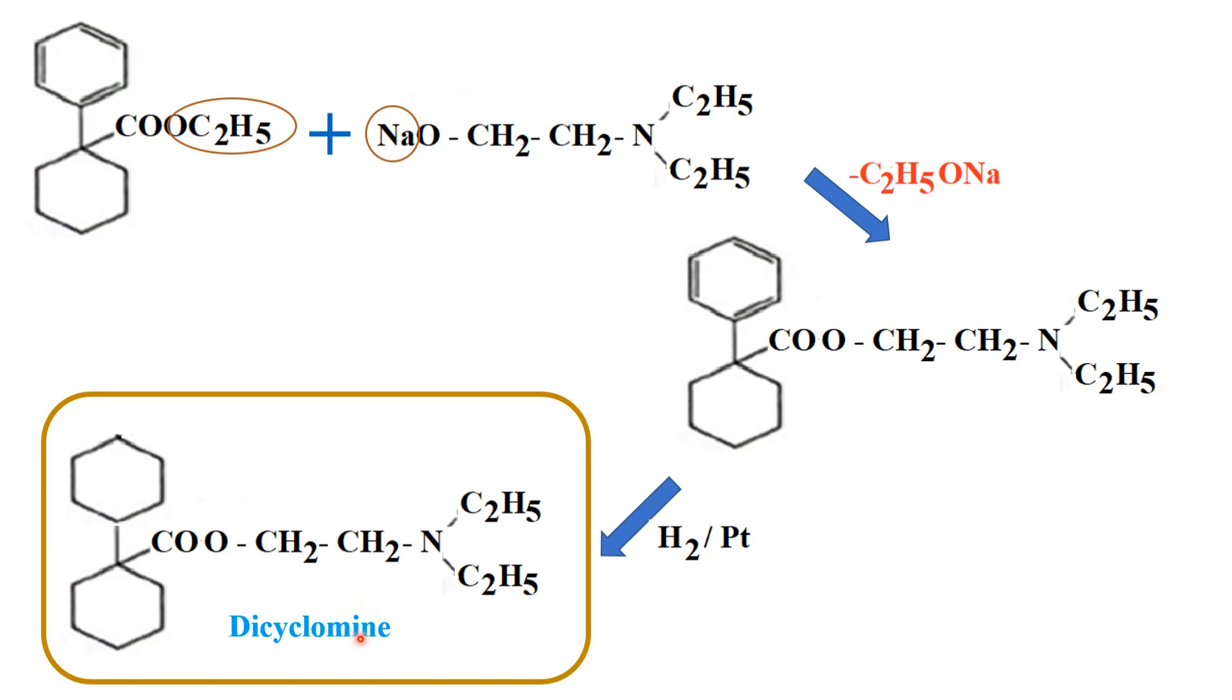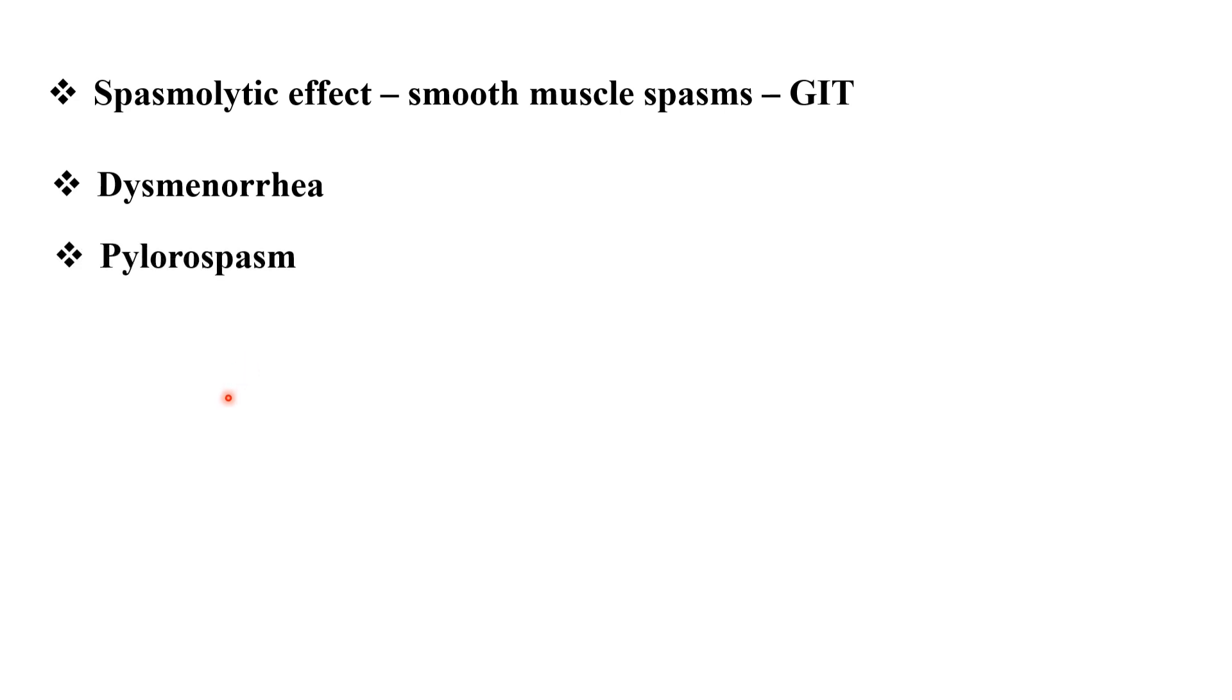That is how this is the way we are getting dicyclamine and it is having a spasmolytic effect on smooth muscle spasms in GIT. It is used in the treatment of dysmenorrhea, pylorospasm and biliary dysfunction.